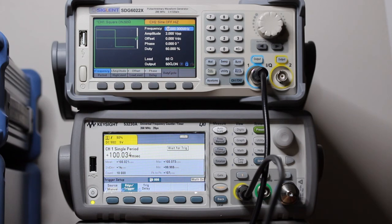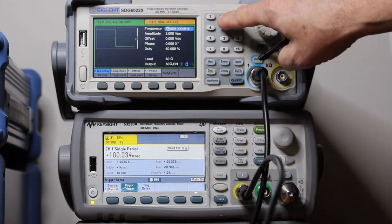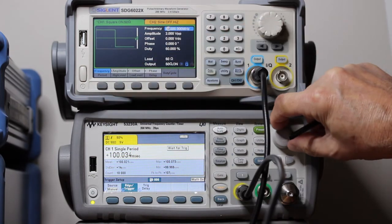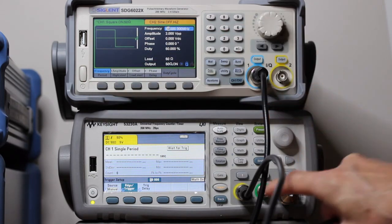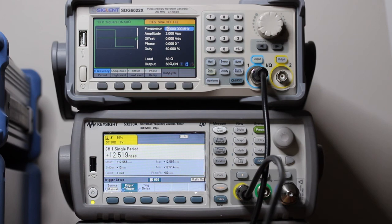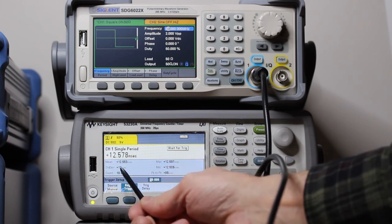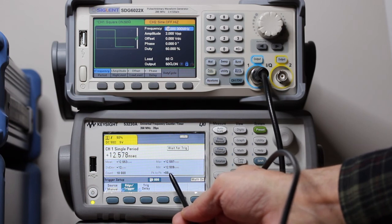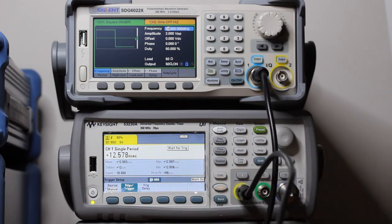The peak to peak value is consistent with the 100 picosecond of the Siglent specification. Let's change now the frequency to 80 megahertz and measure again. We have now 12 picosecond and 88 picosecond, so basically the same.